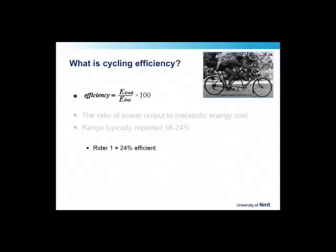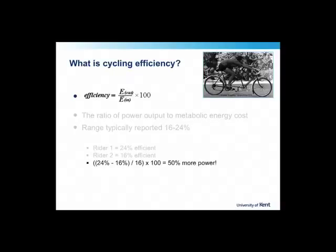To illustrate the impact of these two extremes: if rider one has an efficiency of 24% and rider two has an efficiency of 16%, then theoretically rider one should be able to produce 50% more power than rider two. To look at it another way, if both riders were riding at an oxygen cost of three litres per minute and had similar fuel use — 94% of energy from carbohydrate and 6% from fat — the rider who is 16% efficient would produce around 168 watts compared to 252 watts for the rider who is 24% efficient. In other words, you gain approximately 10 watts for each percentage point of efficiency.